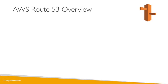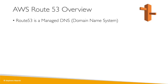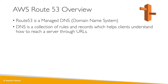Let's talk about Route 53. Route 53 is a managed DNS, and DNS stands for Domain Name System. Overall, it's a collection of rules and records that helps clients understand how to reach a server through URLs — think of it as routing clients to final addresses. In AWS, you have a lot of DNS records available.